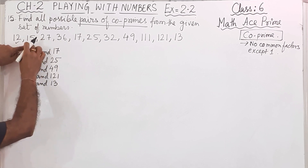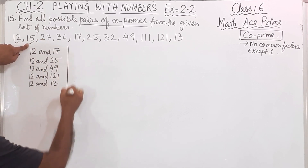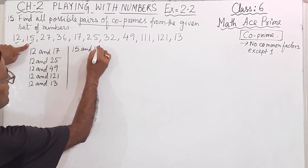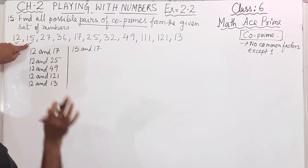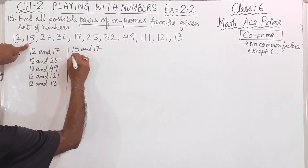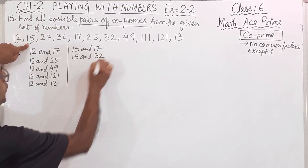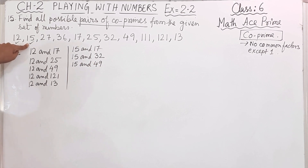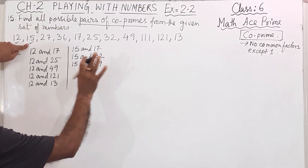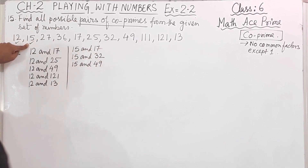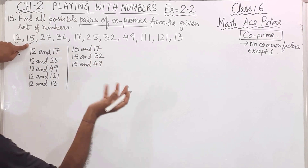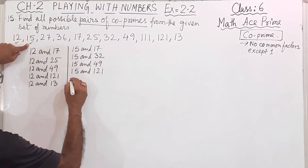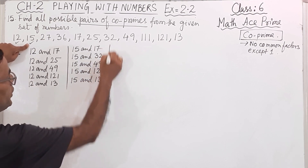Now with 15. 15 and 27 — no. 15 and 36 — no. 15 and 17 — yes. 15 and 25 — no, because 5 is a common factor. 15 and 32 — yes. 15 and 49 — yes, since 7 times 7 is 49 and 15 has no factor of 7, so no common factor other than 1. 15 and 111 — no, 3 is the common factor. 15 and 121 — yes. 15 and 13 — yes.